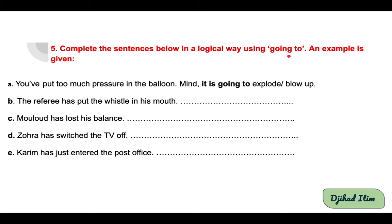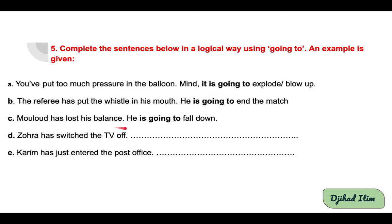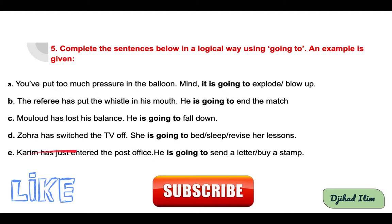Activity 5: complete the sentences using 'going to' to express future intention. Example: You've put too much pressure on the balance — it's going to explode. Corrections: B — The referee has put the whistle in his mouth; he is going to end the match. C — Mulut has lost his balance; he's going to fall down. D — Zohra has switched the TV off; she is going to bed. E — Karim has just entered the post office; he is going to send a letter or buy a stamp. Thank you for watching — don't forget to like and subscribe, goodbye!